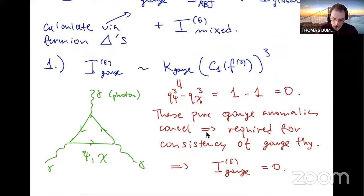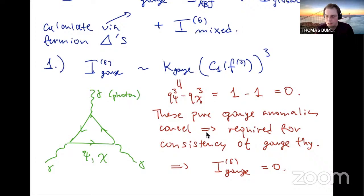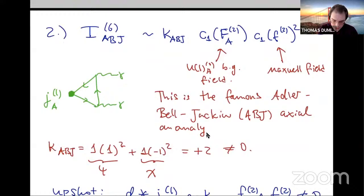The gauge anomaly comes from a triangle diagram with only external photons. In principle, such a term in the anomaly polynomial is proportional to C_1^3 of the Maxwell field strength with some anomaly coefficient K_gauge. But this anomaly coefficient cancels in QED — the electron and the positron make equal and opposite contributions to this diagram, so the gauge anomaly cancels. The theory is vector-like as far as gauge quantum numbers are concerned, which is required for the consistency of QED as a gauge theory.